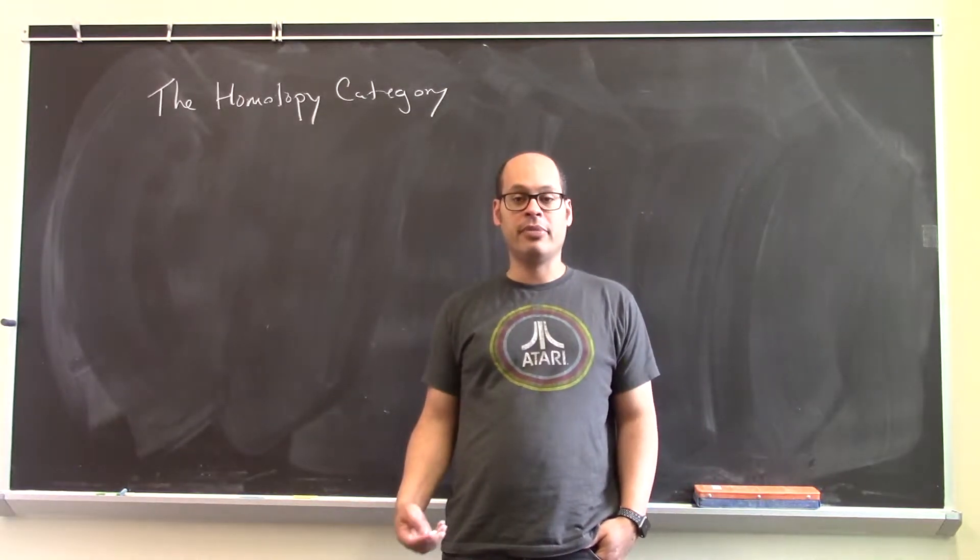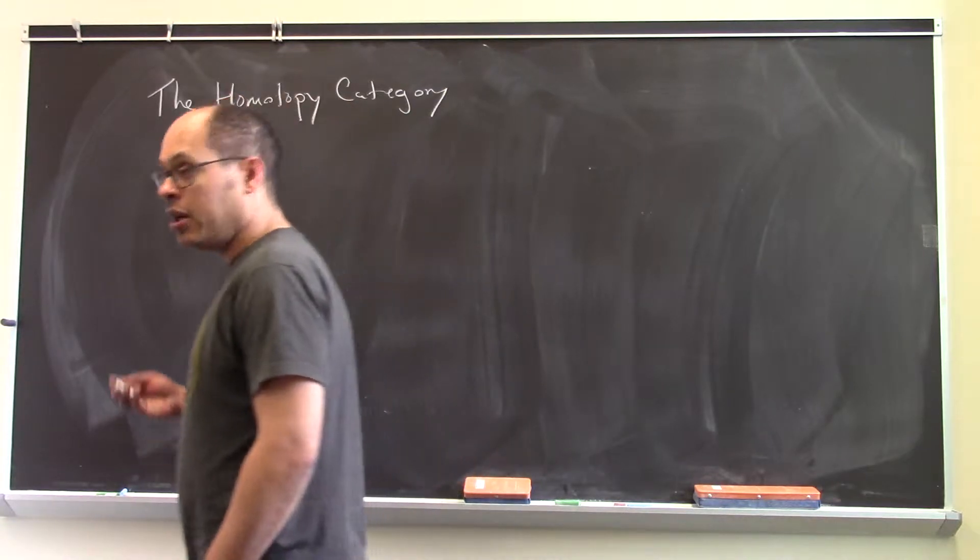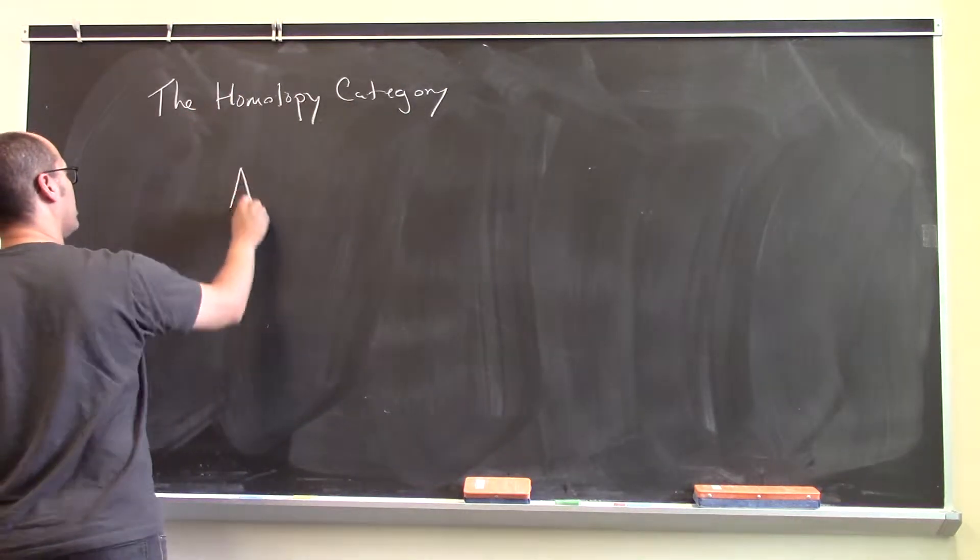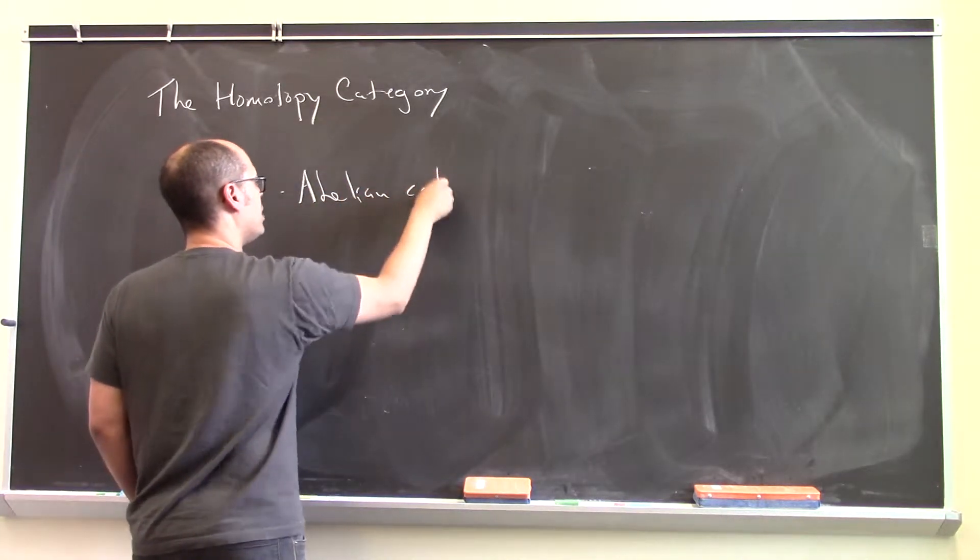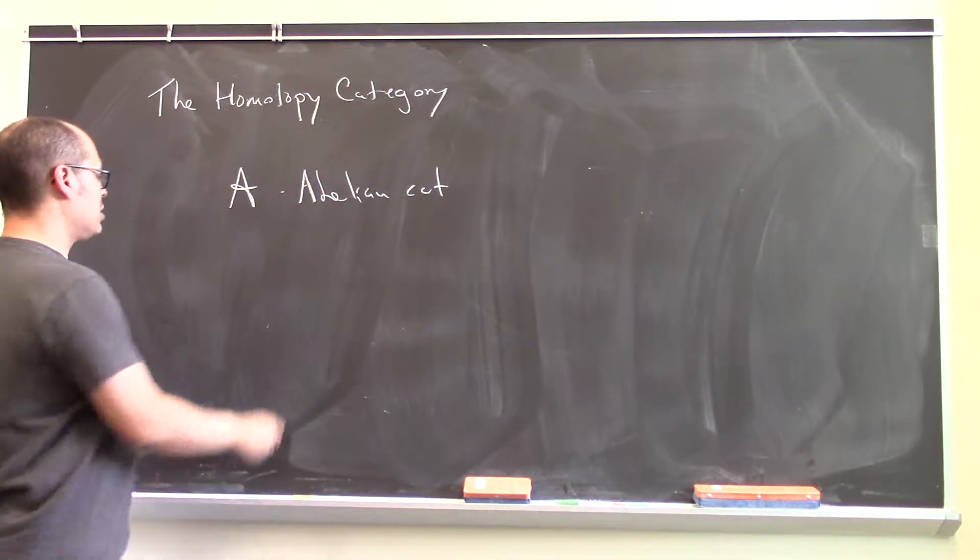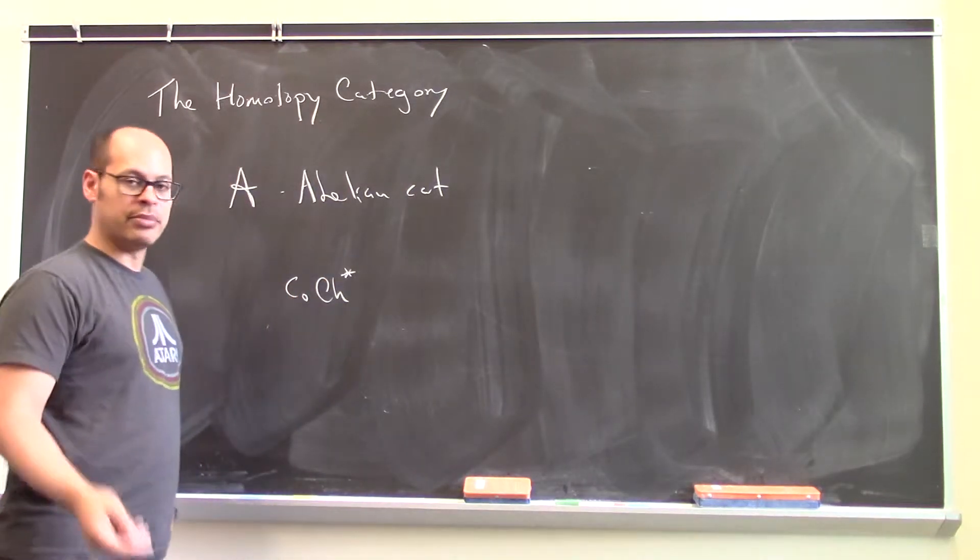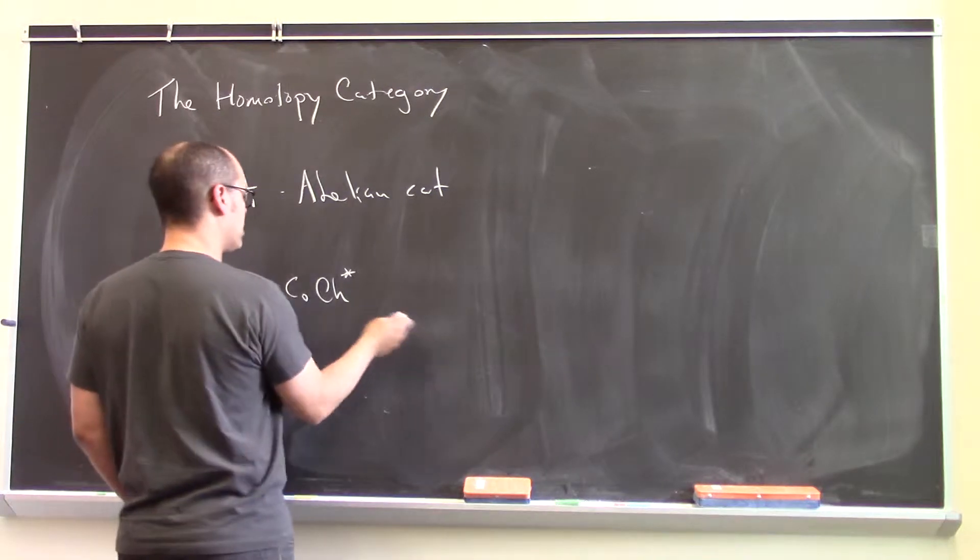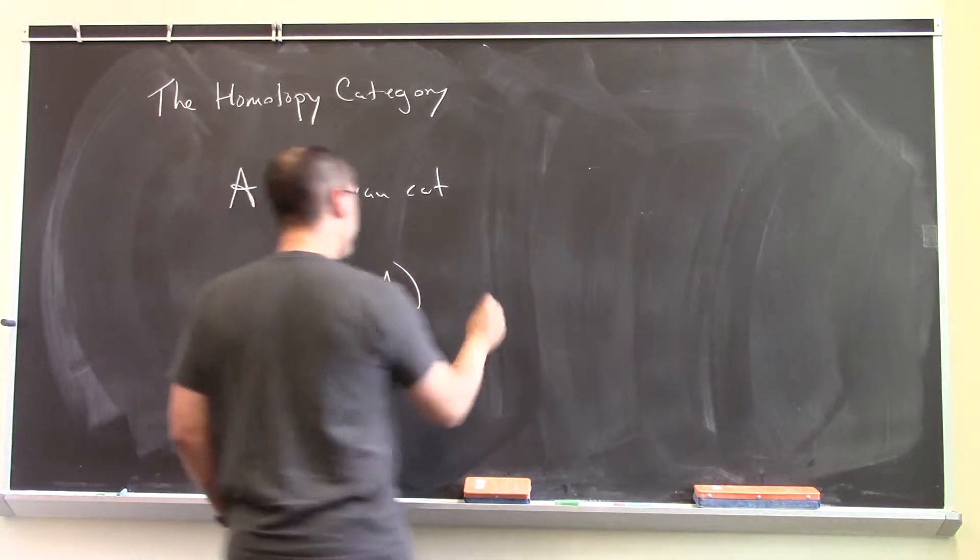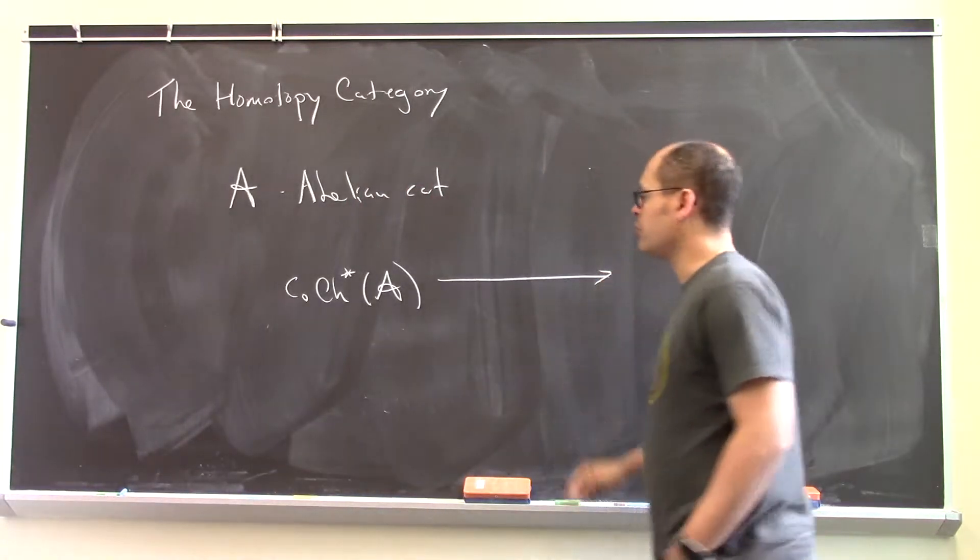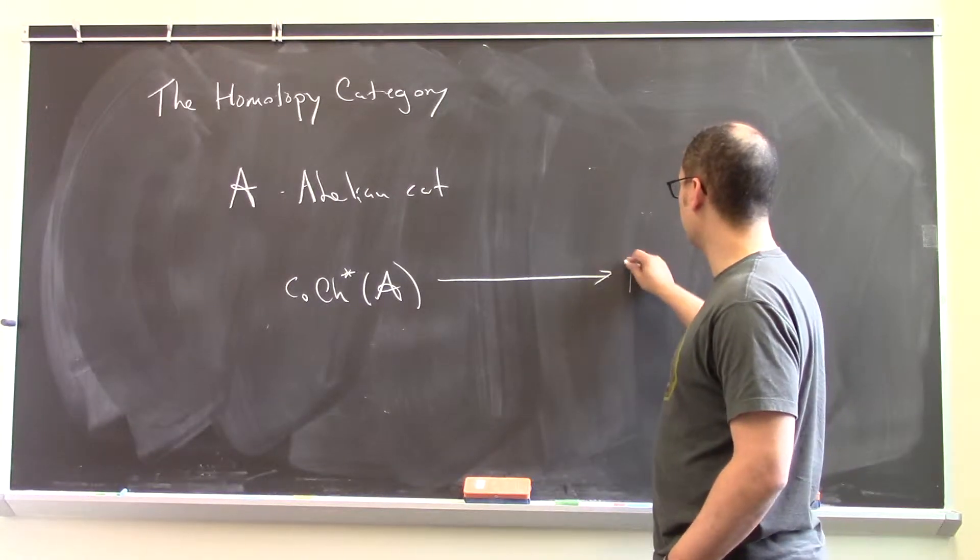Let's now take a more calm and measured approach towards the derived category. So, let's suppose somebody starts by giving you an abelian category. Then we can consider the cochain complexes, maybe bounded of some type, the star representing that in A. And one can proceed to invert quasi-isomorphisms and go directly to the derived category.